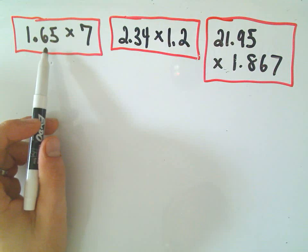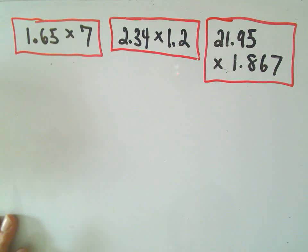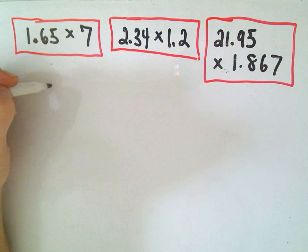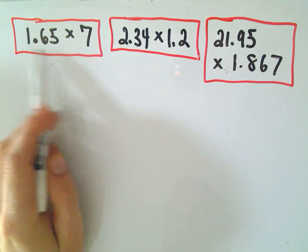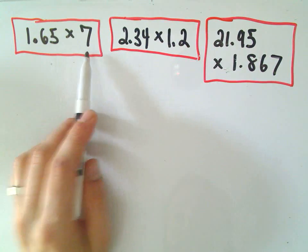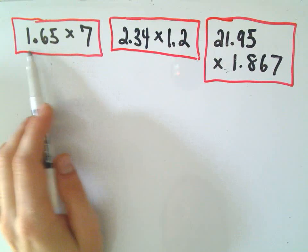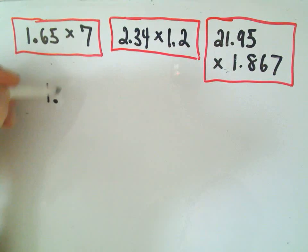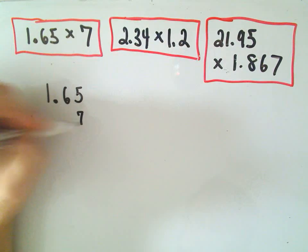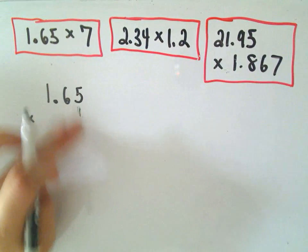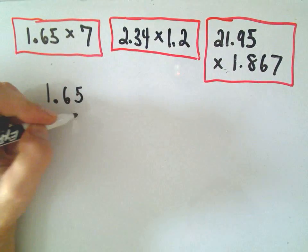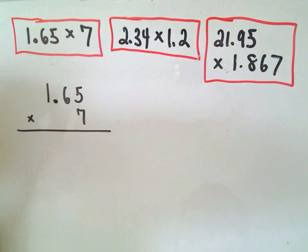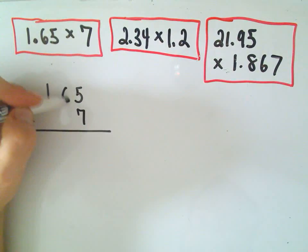So in the first example, we'll take 1.65 times 7. My own personal preference is, notice the first number has three digits and the second number has one. I like to put the number with more digits on top. You don't have to, it's just a matter of my personal preference. And then I'm going to multiply this by the number 7. When I do this, I'm not worried about lining up decimals or anything like that. At this point, I'm really not even concerned that there's a decimal actually in the problem.